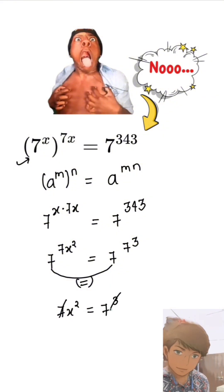Now I can cancel 7. So x square equal to 7 square. When we take the root of both sides, then our answer will be plus minus 7.